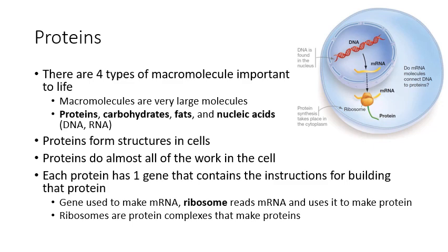The process of using a gene to build a protein is called gene expression. You start with your gene in the form of DNA. Proteins then convert that gene's information into mRNA, building a molecule of mRNA based on the gene. That mRNA is transported outside of the nucleus by more proteins, where it's found by a giant protein complex called the ribosome.